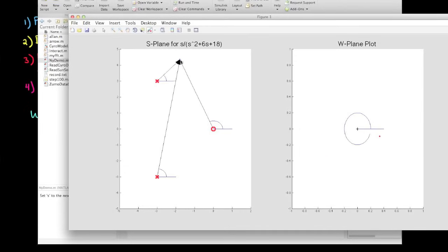And if I circle a pole, then we're subtracting 360 degrees of phase as we move around the pole, causing a counterclockwise rotation in the w-plane.